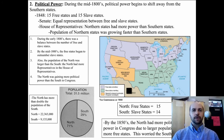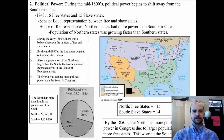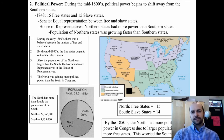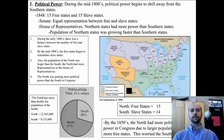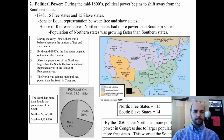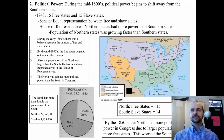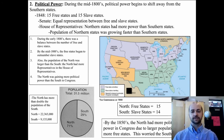Cause number two: during the mid-1800s, political power began to shift away from the southern states. In 1848, there were 15 slave states and 15 free states. In the Senate there was equal representation, but in the House, the northern states began to have more power because their population was growing faster. The South started to worry that the North would start making laws against or limiting slavery.